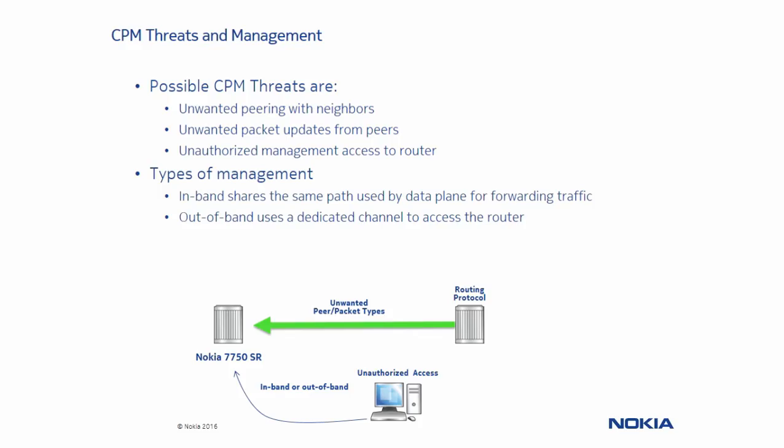There are two types of management access to a router: in-band, where you would access the router on the same path traversed by the data plane, and out-of-band, where you access the router from a dedicated channel that would require its own network.